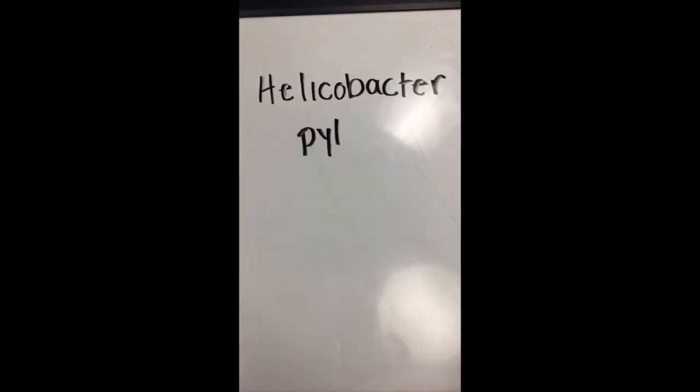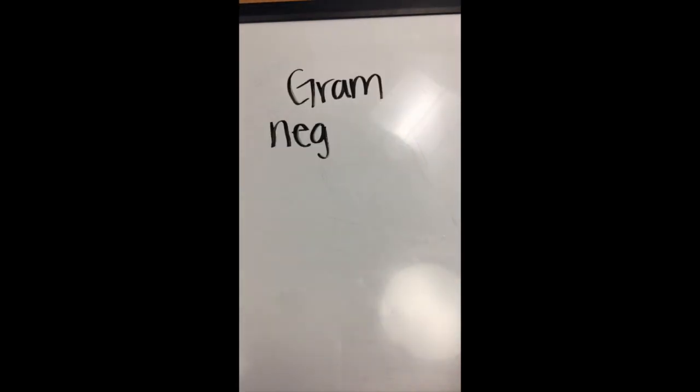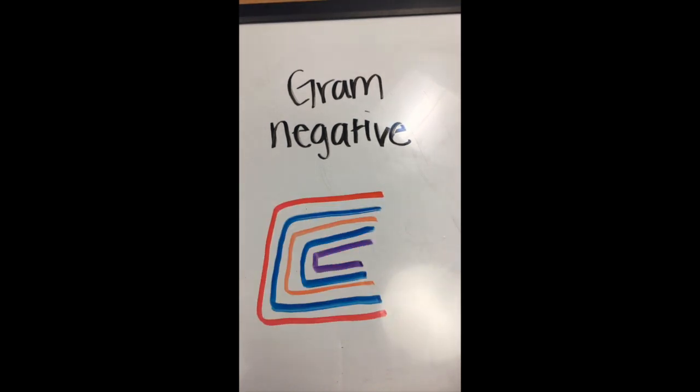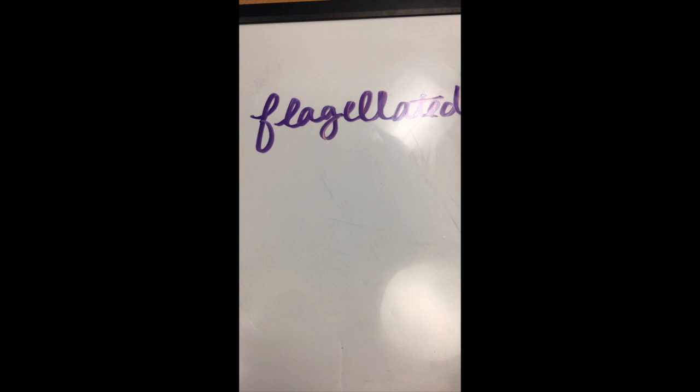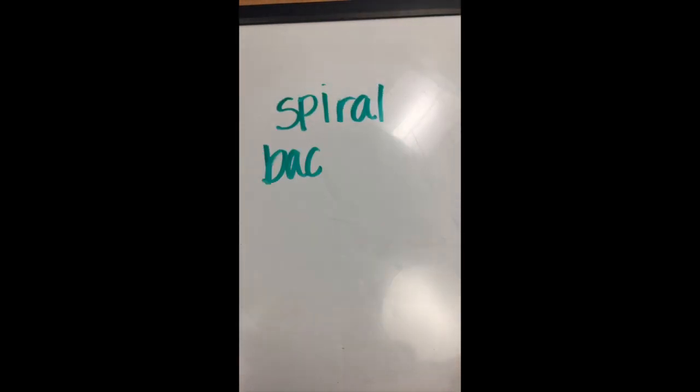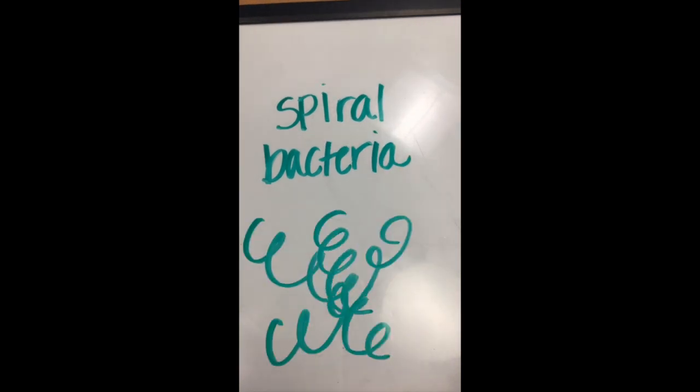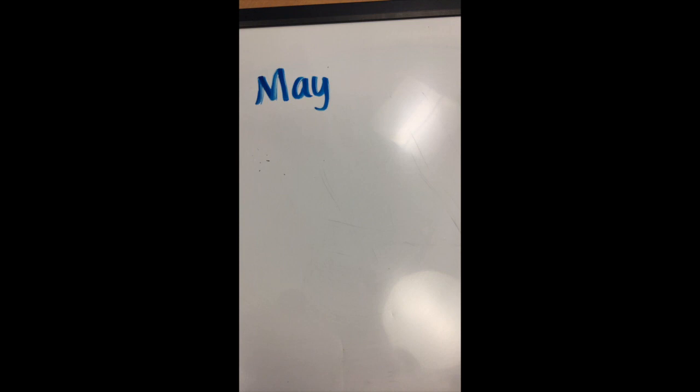Helicobacter pylori is a high-priority superbug. It's gram-negative, and it's flagellated with usually four to six flagella. It has a spiral shape.